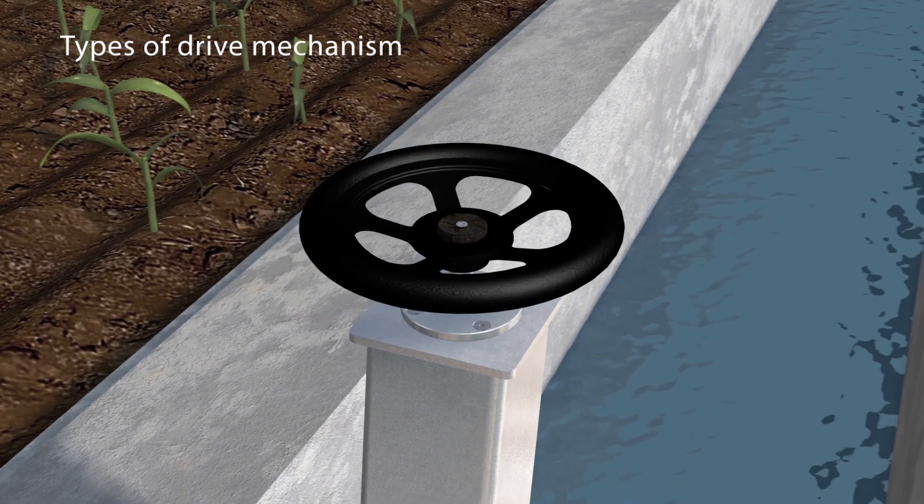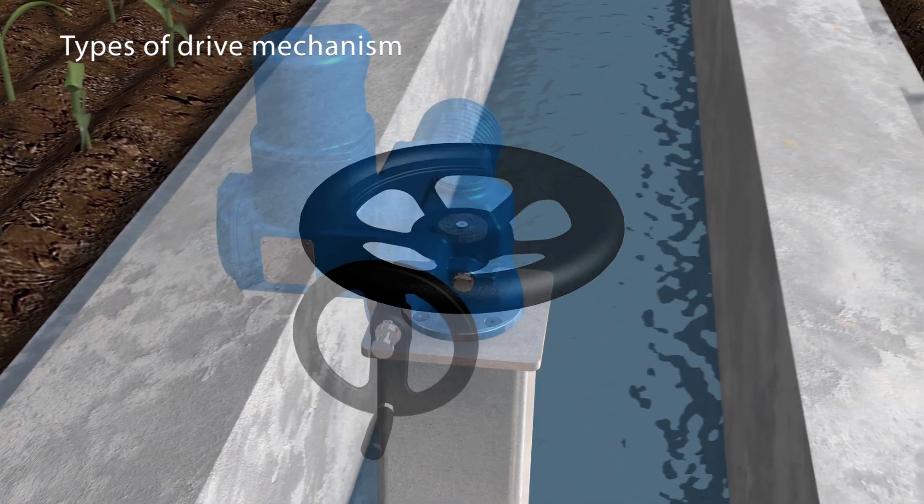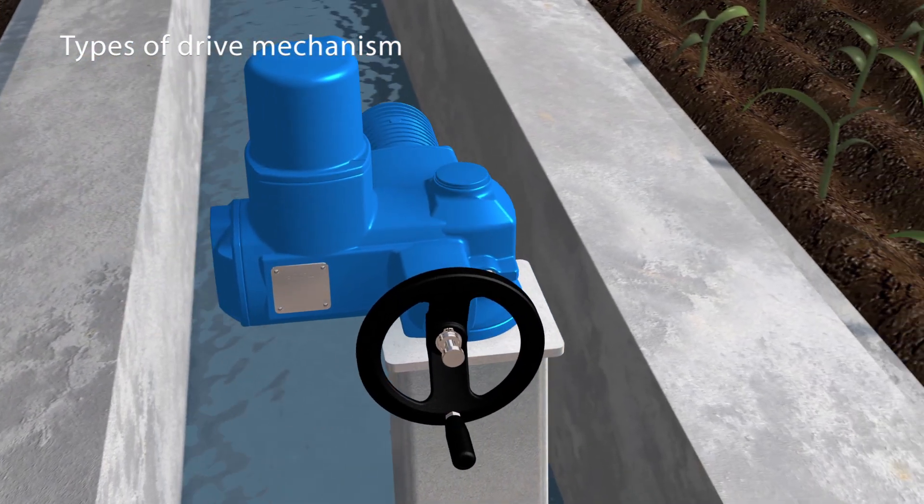Standard sluice gates can be fitted with drive mechanisms using a hand wheel, electric actuator, or manual gearbox.